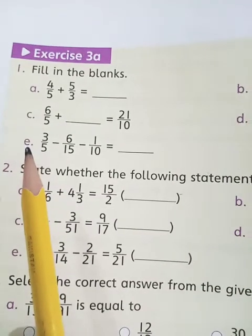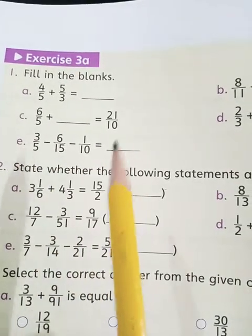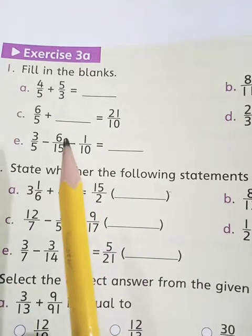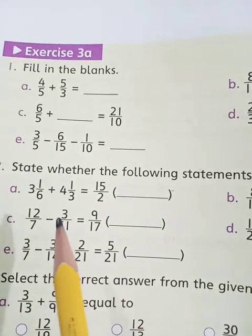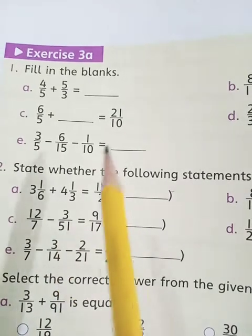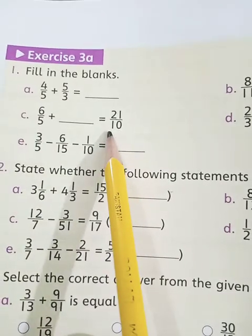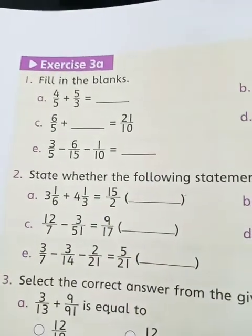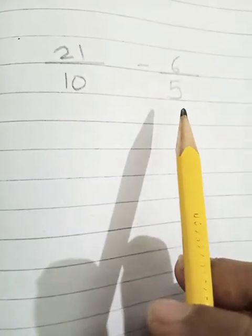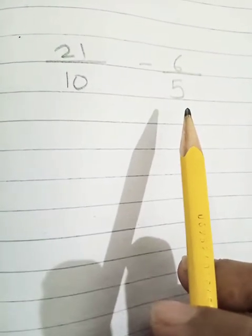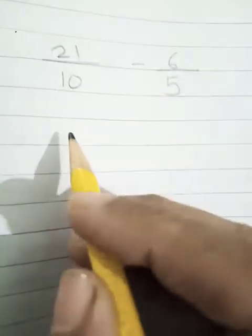Now come to part c. 6 upon 5 plus dash equals 21 upon 10. What should we add in 6 upon 5 to get 21 upon 10? You know the rule to solve this sum. We subtract this term from this term. So it will be 21 upon 10 minus 6 upon 5. Now what you will do? You will make the denominator same. How can we make the denominator same?